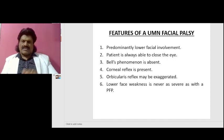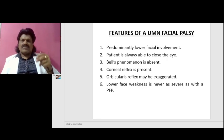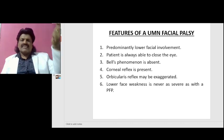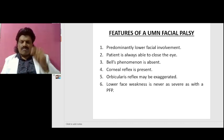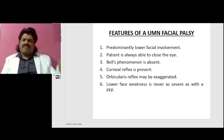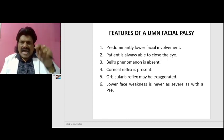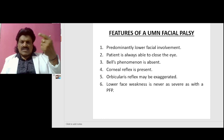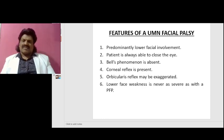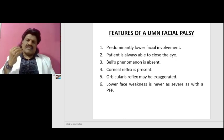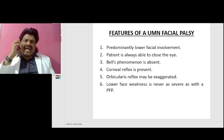Corneal reflex is present. The afferent is the ophthalmic division of the trigeminal nerve and the efferent is bilateral facial nerves. Since this is a UMN facial palsy, corneal reflex is present, whereas in an LMN facial palsy, corneal reflex will be absent. Since it is a UMN facial palsy, the orbicularis reflex may be exaggerated. The lower facial weakness, though affected, is never as severe as with a peripheral facial palsy.